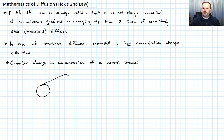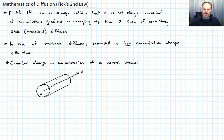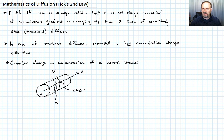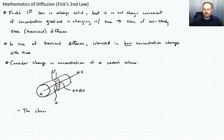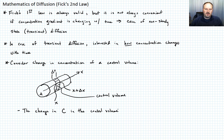Let me draw the control volume — it's a cylinder. The x-axis passes through the center; this is still a 1D case. The cylinder has some cross-sectional area A, and I'm looking at a control volume defined by a region of thickness delta x. This location will be x, and this location will be x plus delta x. We want to know how the concentration changes inside that control volume.